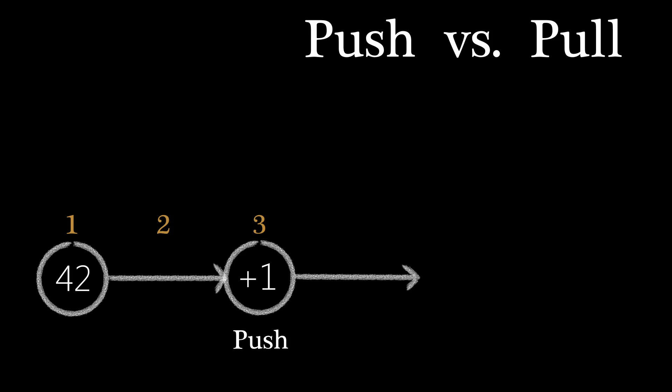The increment node then receives the value on its input, adds 1 to it, and puts a result on its output link, where it can be used by the next node.